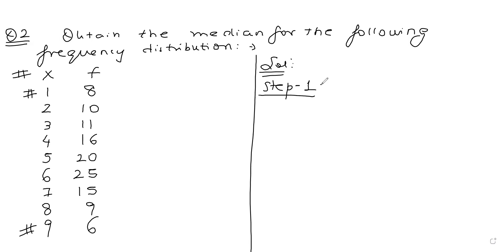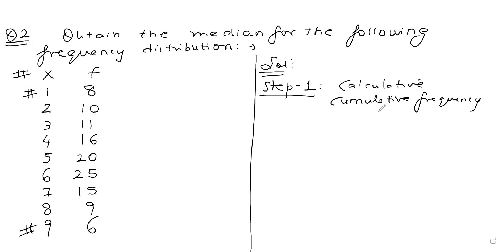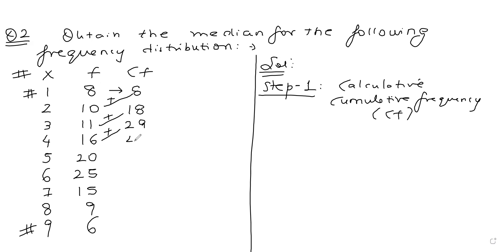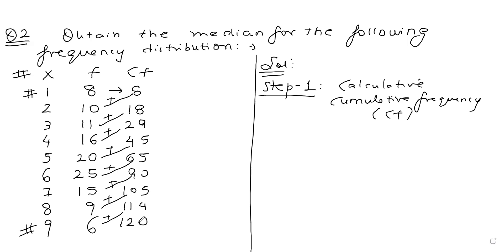Step 1: whenever you have a discrete frequency distribution, calculate cumulative frequencies. The CF column is: 8, then 8+10=18, then 18+11=29, then 29+16=45, then 45+20=65, then 65+25=90, then 90+15=105, then 105+9=114, then 114+6=120. The sum of all frequencies is 120, which is the total number of observations N.